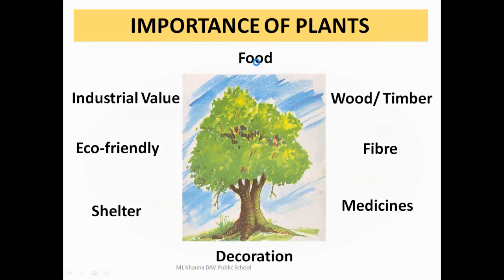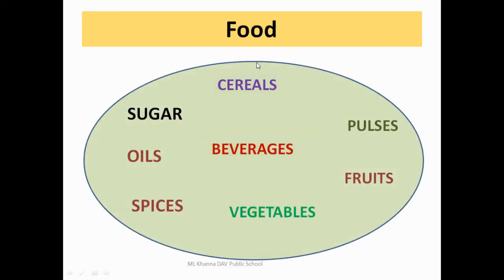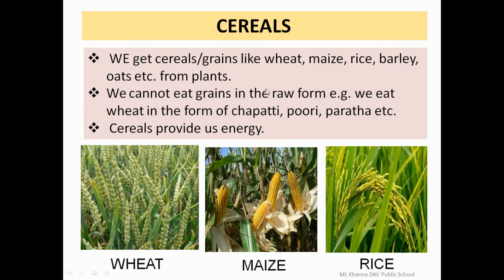Now we will study one by one about these points. First, we will study about food. Under food, we have a number of food items like cereals, pulses, fruits, vegetables, spices, oils, sugar, and beverages. Cereals are grains like wheat, maize, rice, barley, oats, etc., from plants.